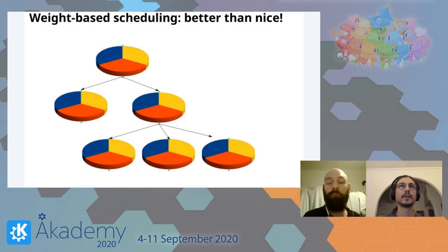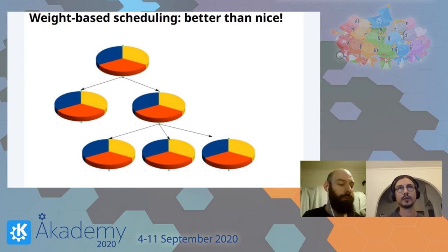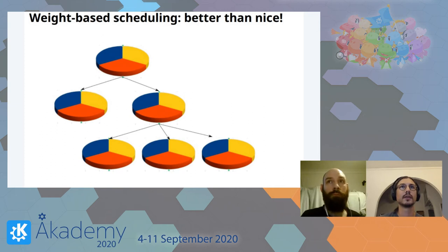'nice' is the older API for defining CPU usage priorities. The cgroup weight approach is more powerful because you can have weights that make priority go down but also go up. It's also more powerful because it operates at a control group level instead of a simple process level, and it has a recursive nature that makes it much more powerful.